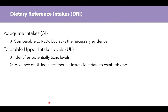Other components of the DRI include Adequate Intakes and Tolerable Upper Intake Levels. AI is very comparable to the RDA, but lacks the necessary evidence. Where strong scientific evidence is needed to provide an RDA, that research isn't available for some nutrients. But they can still say they don't have the strong scientific evidence for an RDA, but feel confident enough to say people need about this much — so they give it an AI.